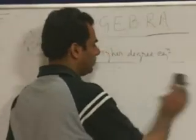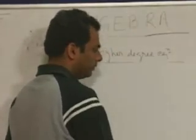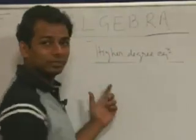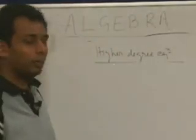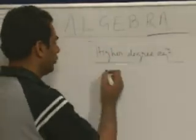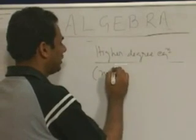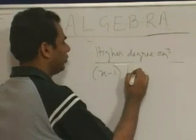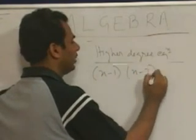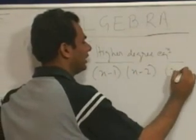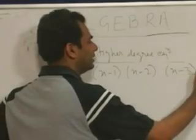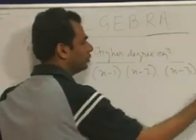And if I take the inequality part of the higher degree equation — for example, if I say (x minus 1) into (x minus 2) into (x minus 3) is greater than 0.